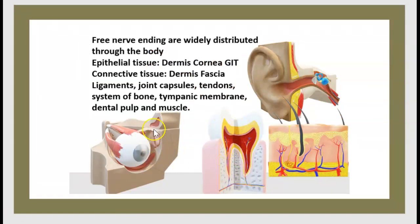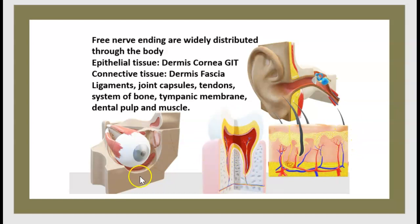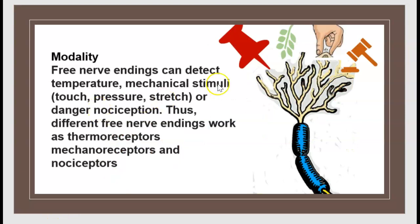Let's review. Free nerve endings are widely distributed through the body — in the cornea, connective tissue, tympanic membrane, dental pulp, and the dermis. Free nerve endings can detect temperature, mechanical stimuli such as touch, pressure, and stretch, or danger — nociception. Thus, different free nerve endings work as thermoreceptors, mechanoreceptors, and nociceptors.